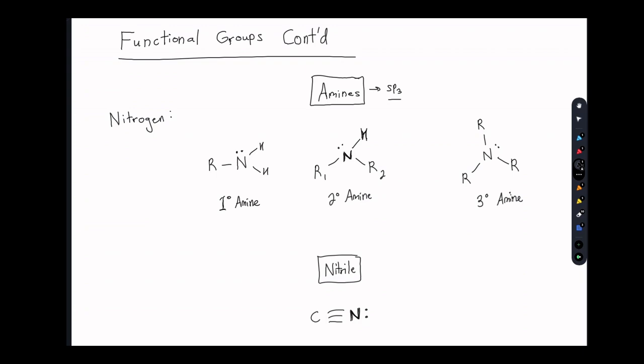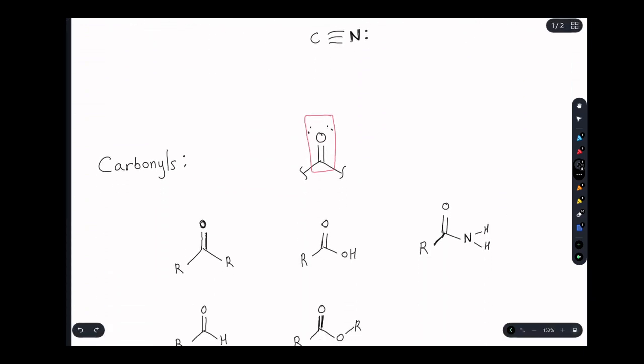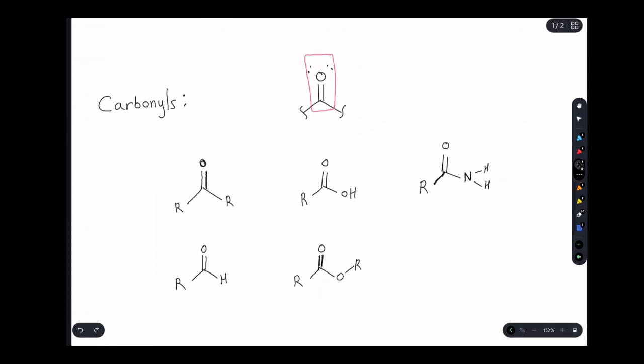The last type of functional group I want to cover is the carbonyl-containing functional groups. So what is a carbonyl? The carbonyl refers specifically to this carbon-oxygen double bond. So when we have a carbon here that is double bonded to an oxygen, that is the carbonyl. However, the carbonyl isn't really a functional group, as that carbon in the middle can still be connected to two different things.